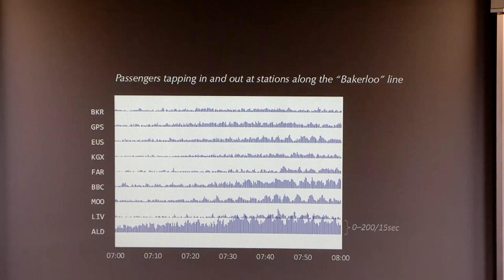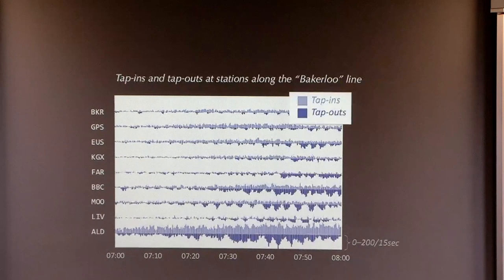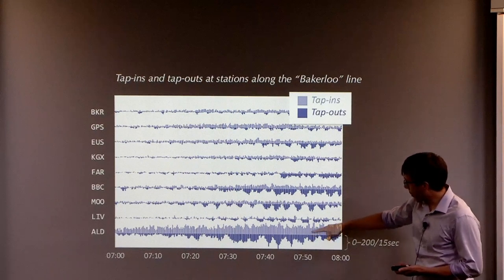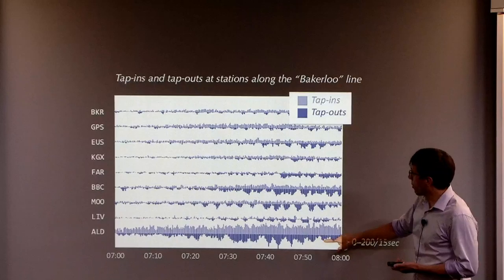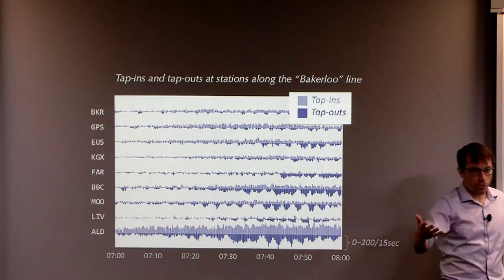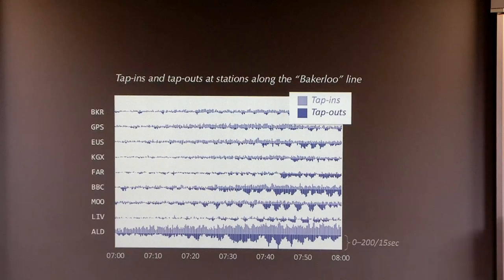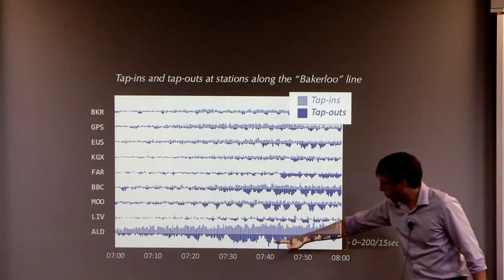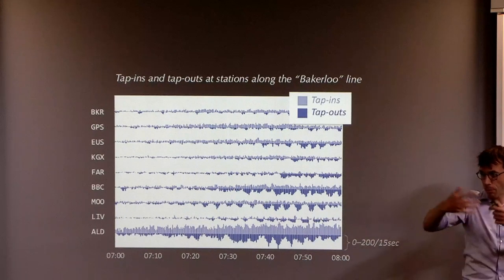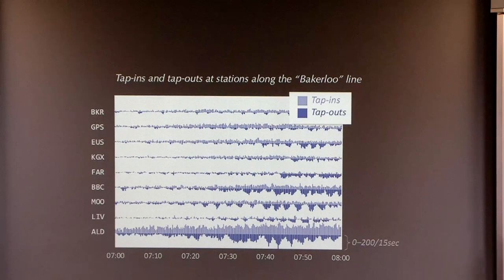OK, so let's try something a little bit cleverer with this data. In this version, I'm drawing the same data, but I'm drawing tap ins above the line. And I'm drawing tap outs below the line. Tap ins, you'd expect people would arrive as some random process like a Poisson process. Tap outs, you would expect there to be spikes of tap outs every time a train arrives. A train arrives, lots of people disembark at the same time. That gives a spike.